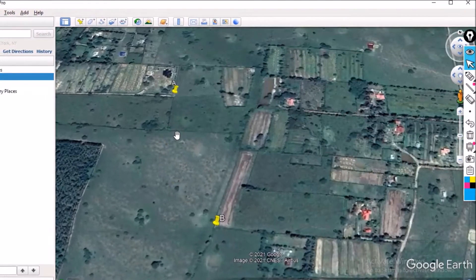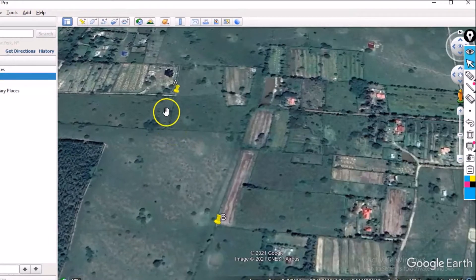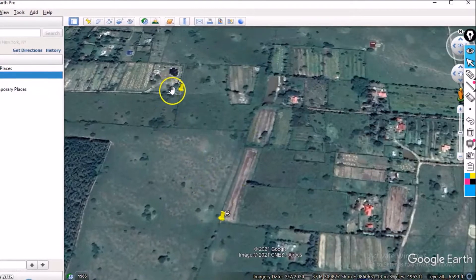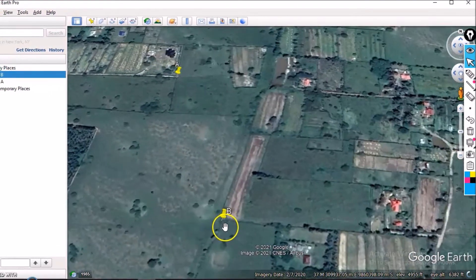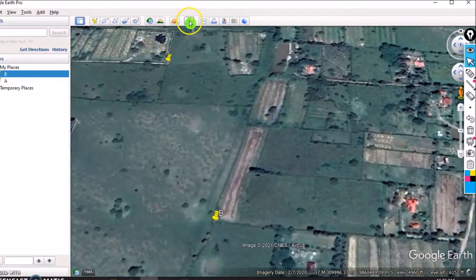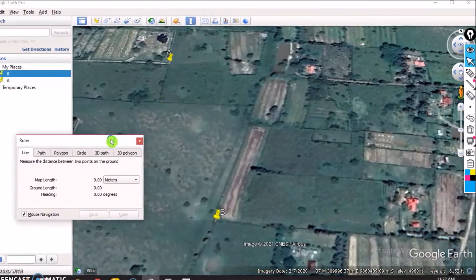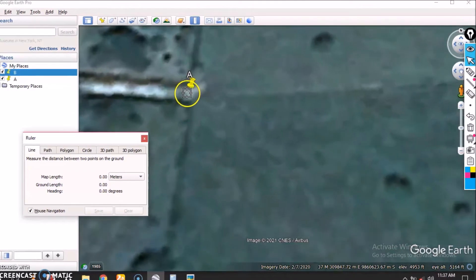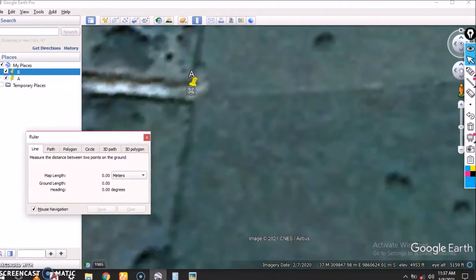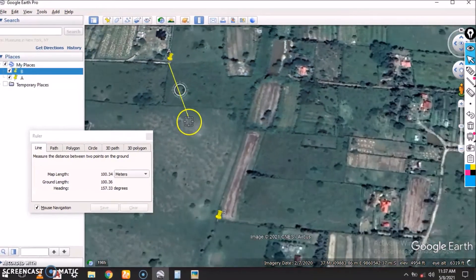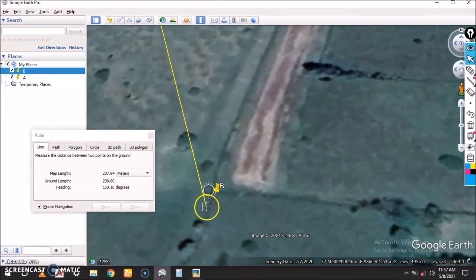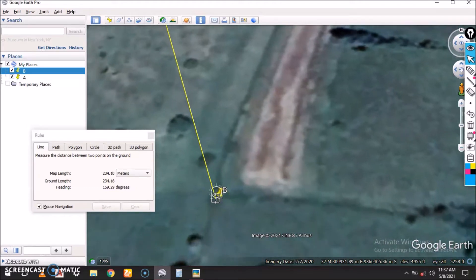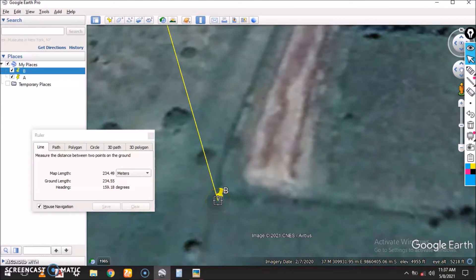An example is point A to point B. We have the distance already here, we can get it from Google by using our ruler and then we measure the distance from point A to point B. By use of our ruler we are getting 234.5 meters.